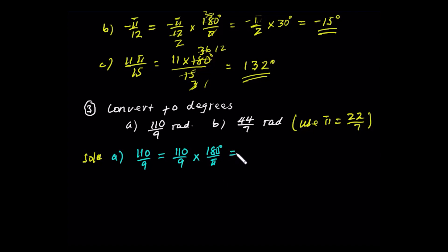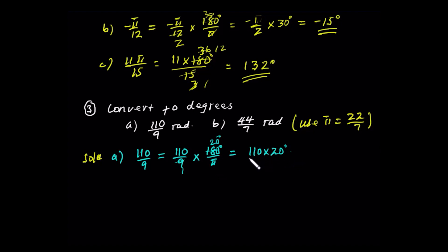This is equal to 110 over 9 times 180 degrees divided by pi, where pi is 22 over 7 divided by 22 over 7.